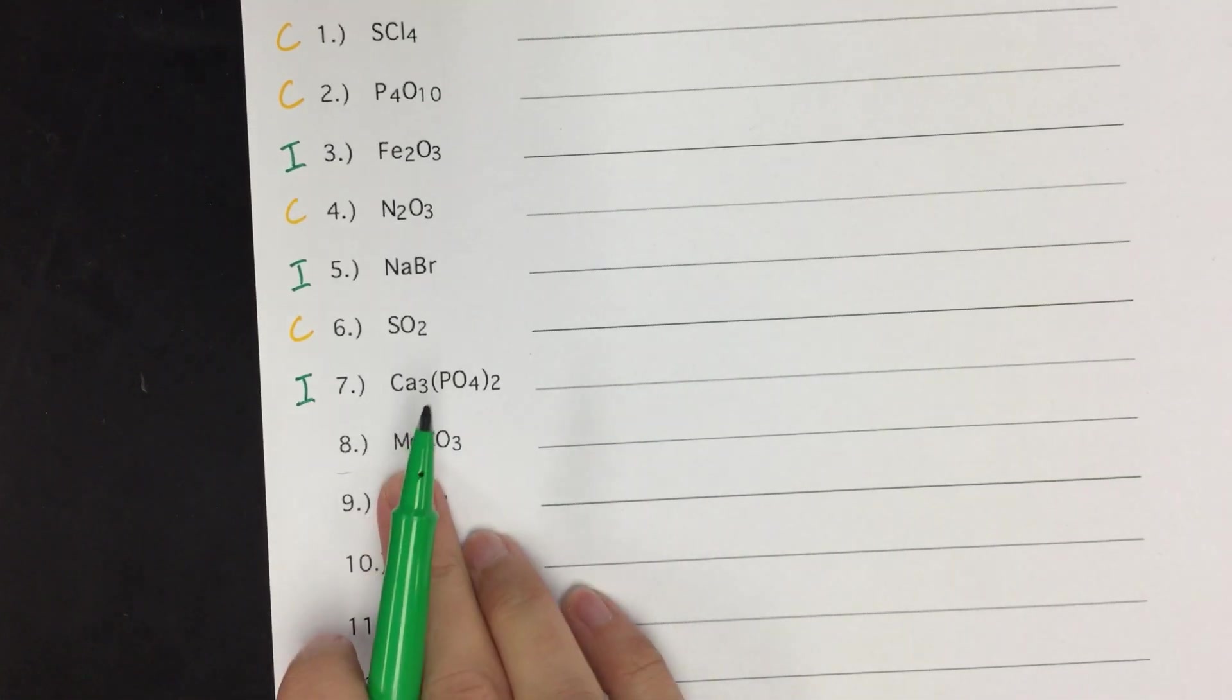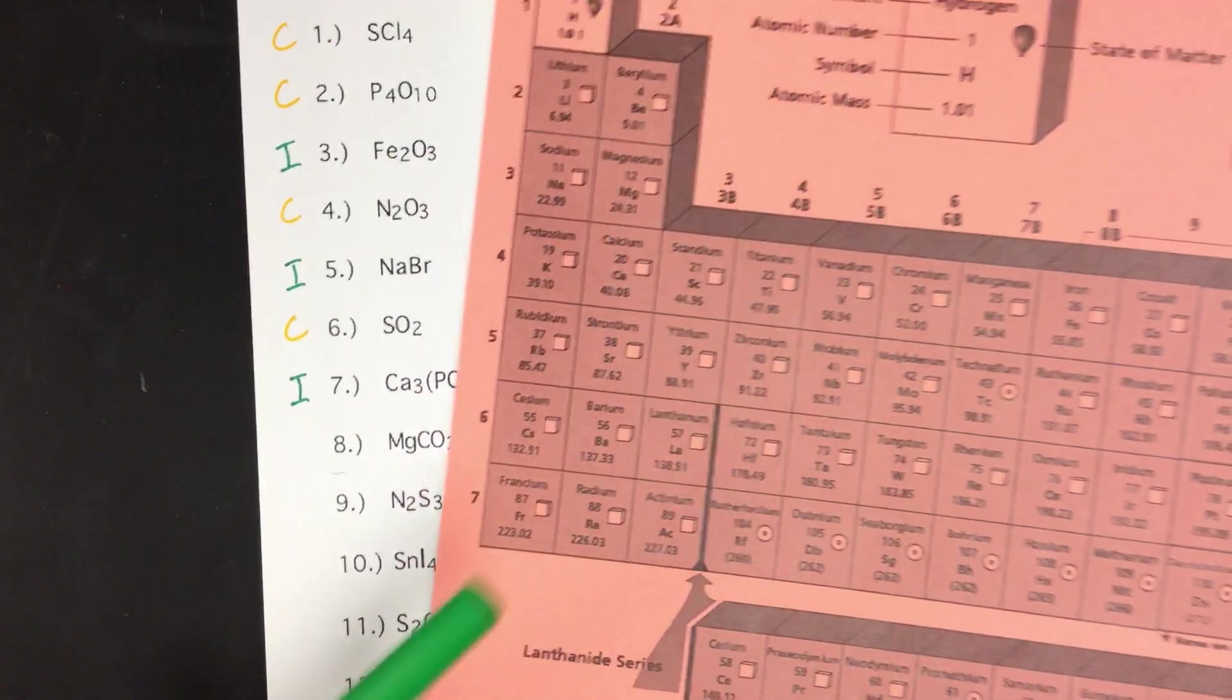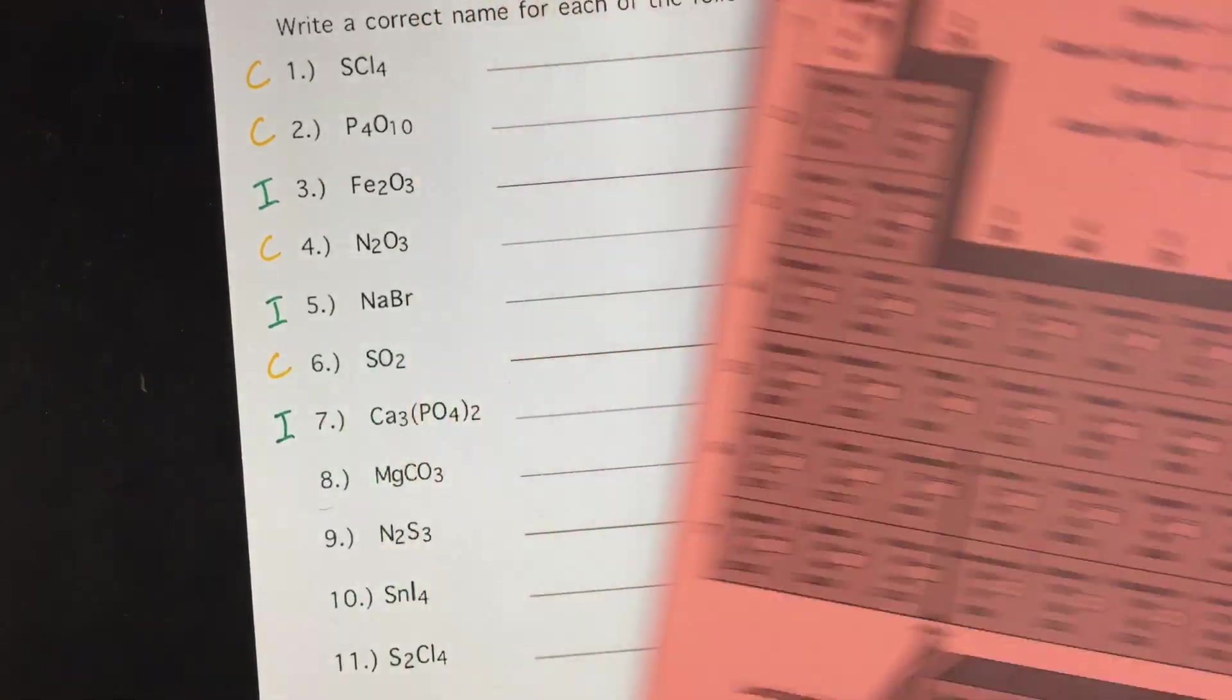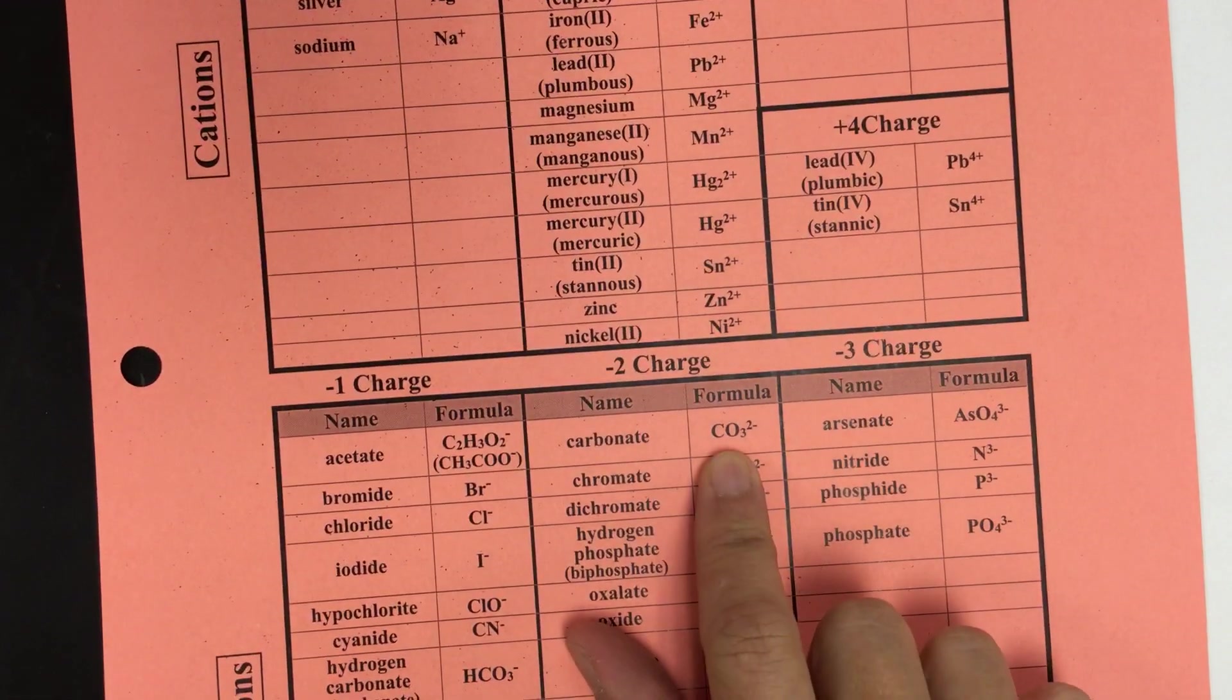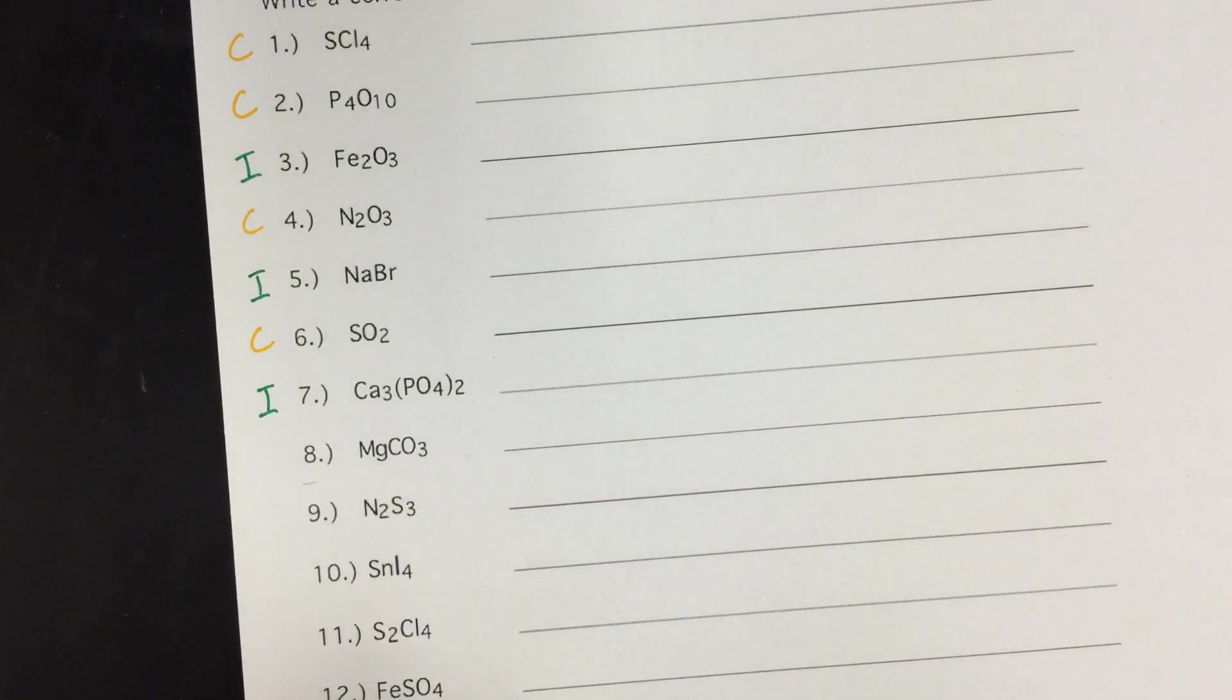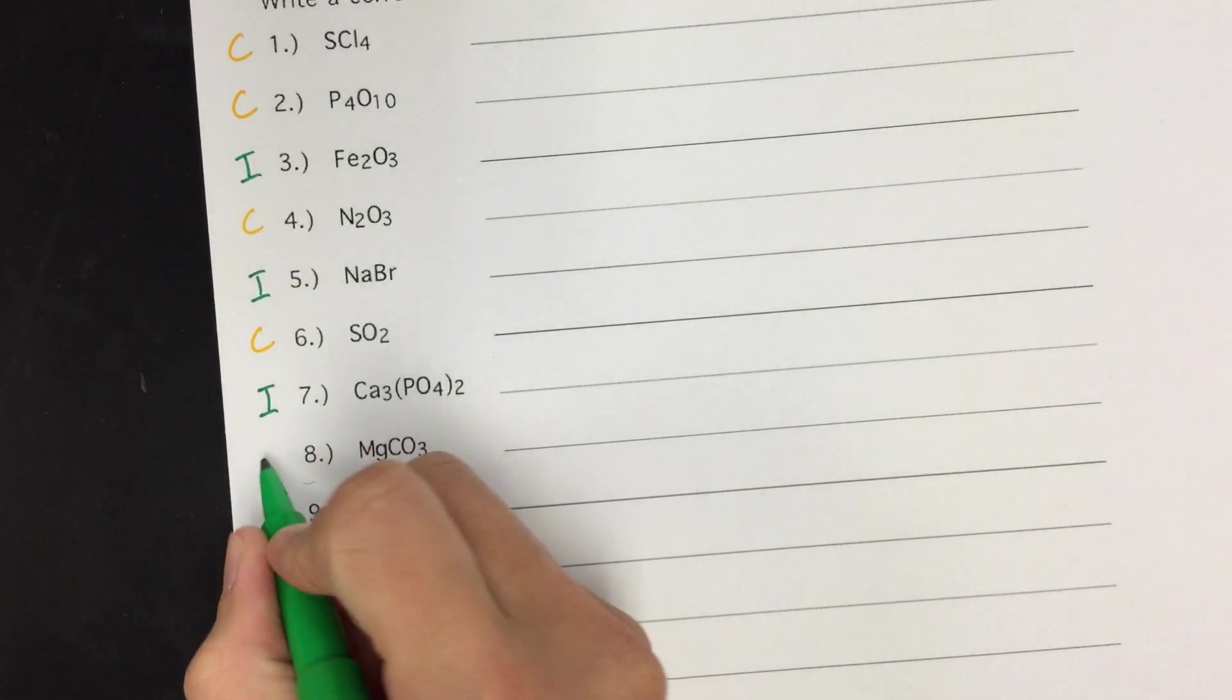And then we'll end with number eight. Magnesium is a metal, located here. And then CO3 is another polyatomic ion. It is carbonate on your ions list. So since it's on your ions list as a polyatomic anion, that one's also going to be ionic.